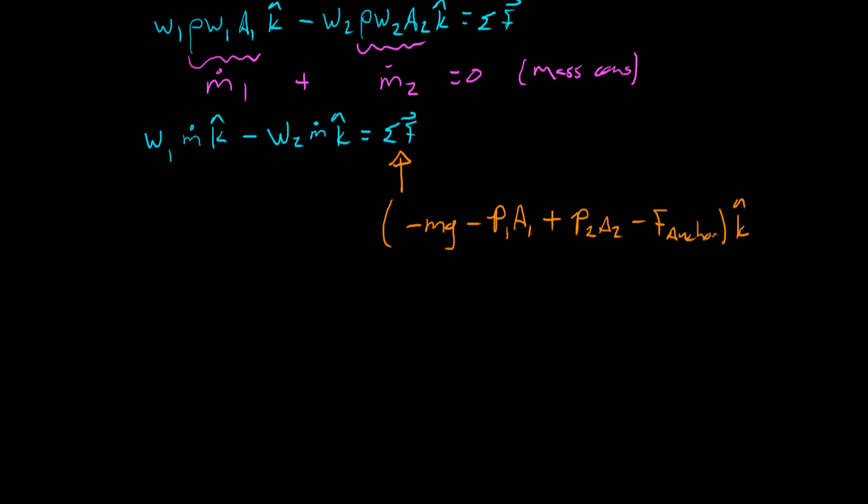So we can sub all that in and we're getting really close to the end here now. W1 times M dot minus W2 times M dot. And that has to be equal to the anchor force minus P1 A1 plus P2 A2 minus mg.